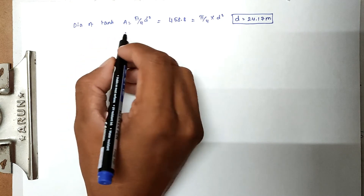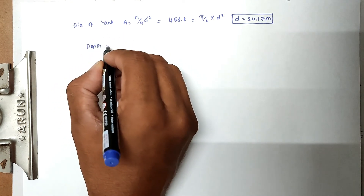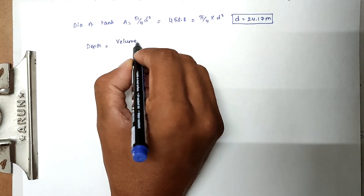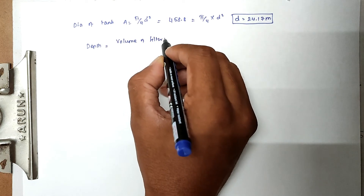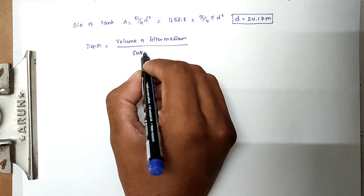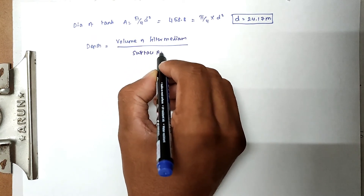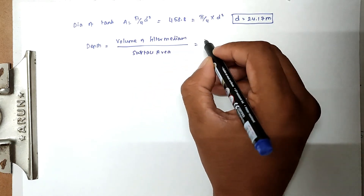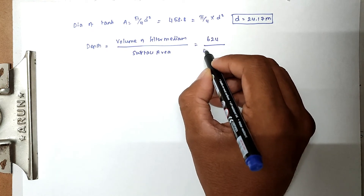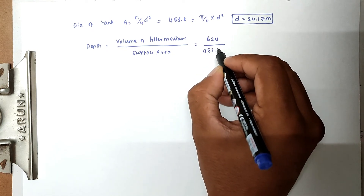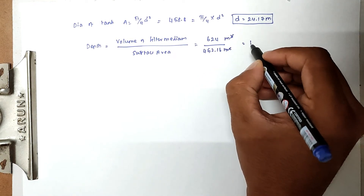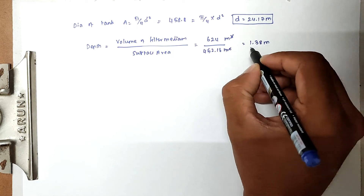Now for the depth of filter required: depth equals volume of filter media divided by surface area. Volume is 624 m³ divided by surface area of 452.16 m². The square meters cancel, giving a depth of 1.38 meters.